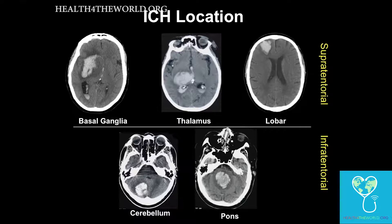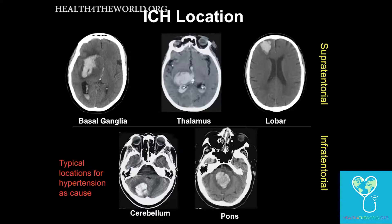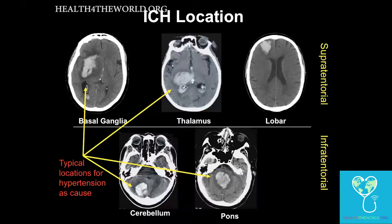ICH locations can be divided into supratentorial and infratentorial, and that's a component of the ICH score — infratentorial hemorrhage gets a point. These locations are also important because certain areas are very typical for hypertension as a cause, since deep penetrating arteries are injured by chronic hypertension — specifically basal ganglia, thalamus, cerebellum, and pons. If you see a lobar location, that tends not to be hypertension, but raises suspicion for another cause like amyloid, coagulopathy, or sympathomimetic drugs of abuse.